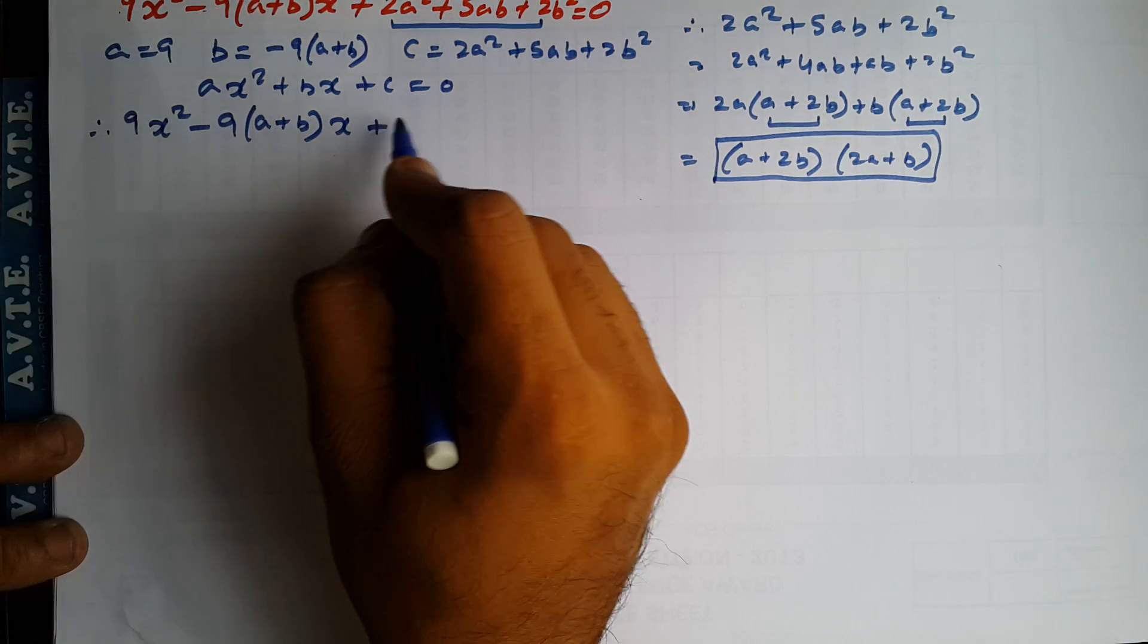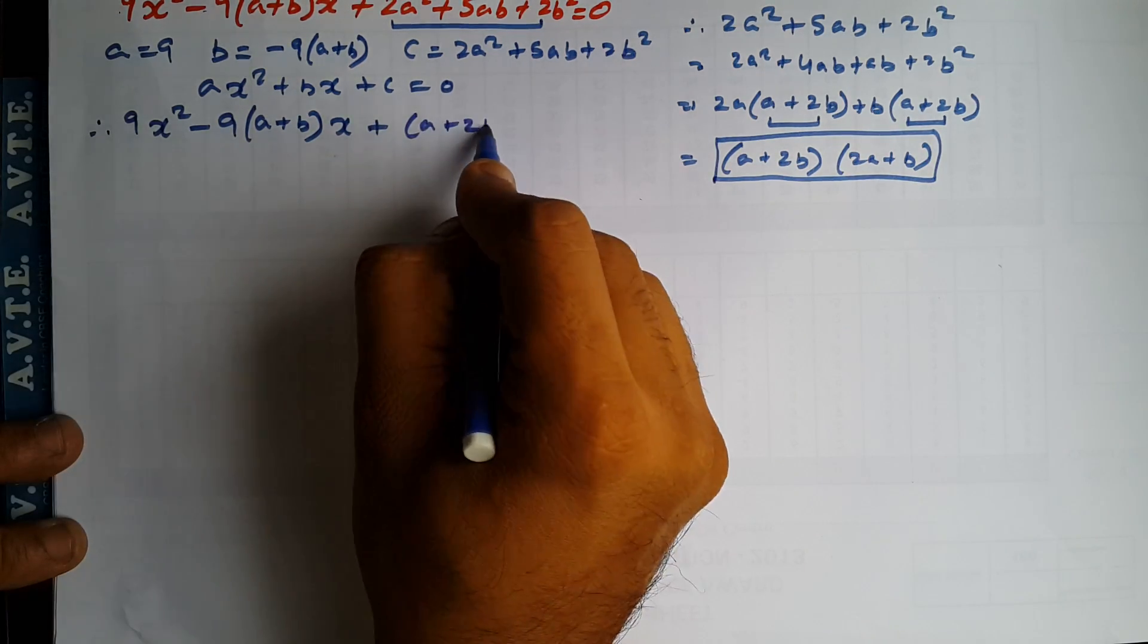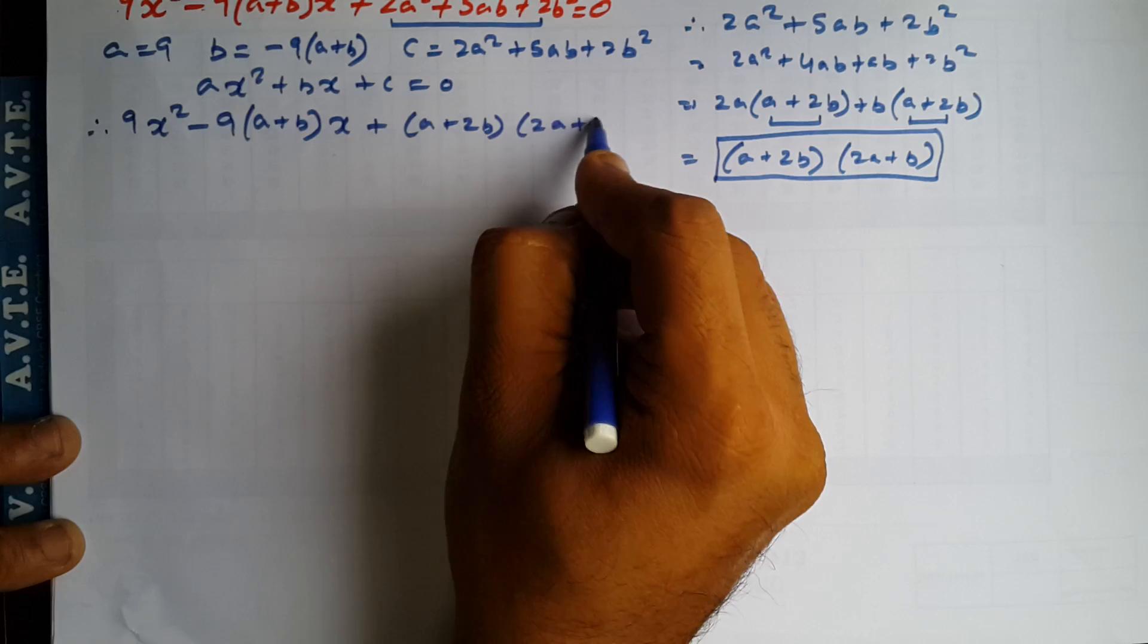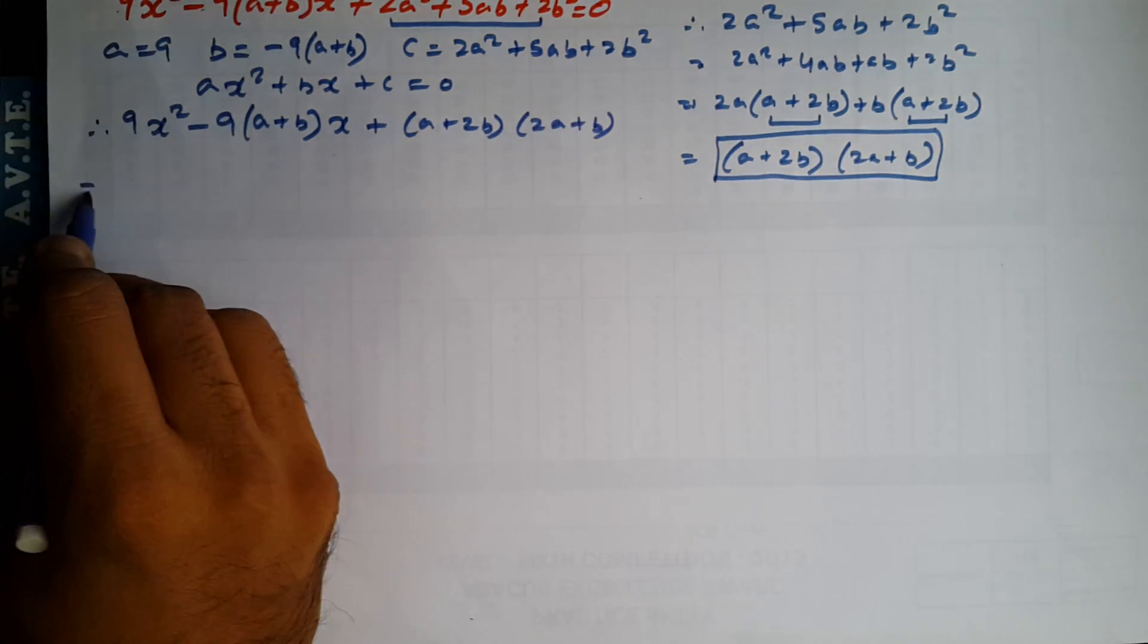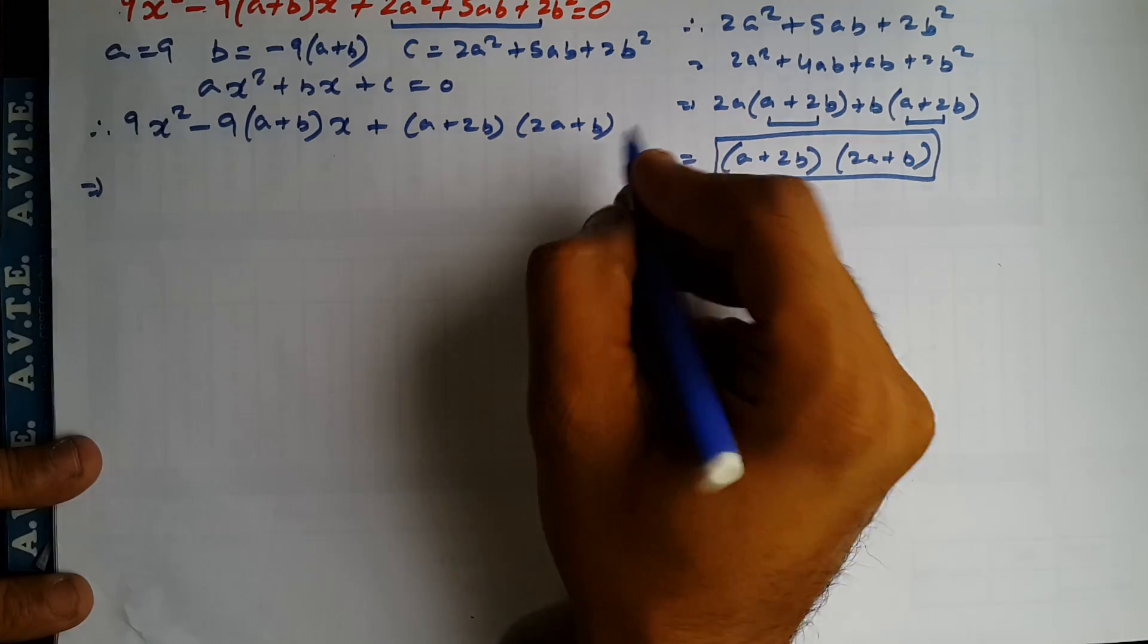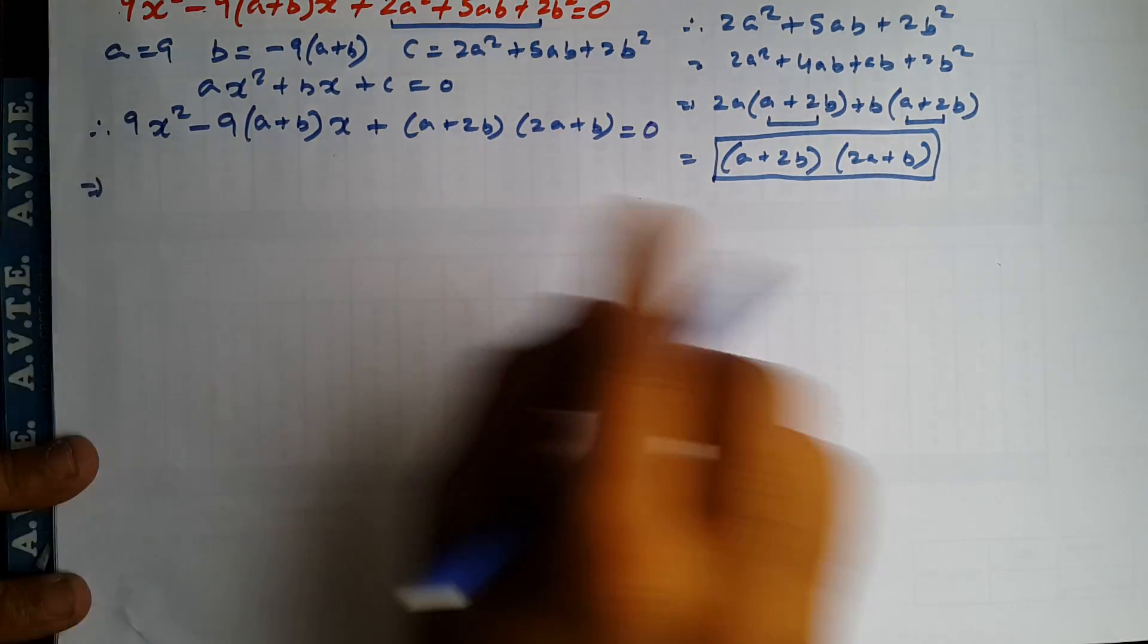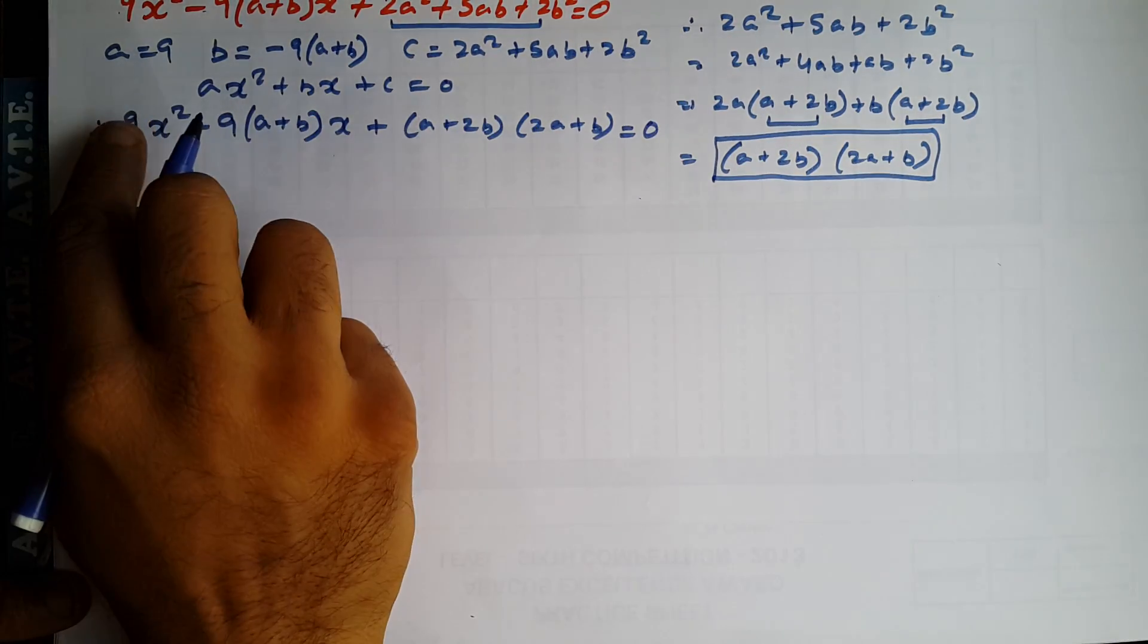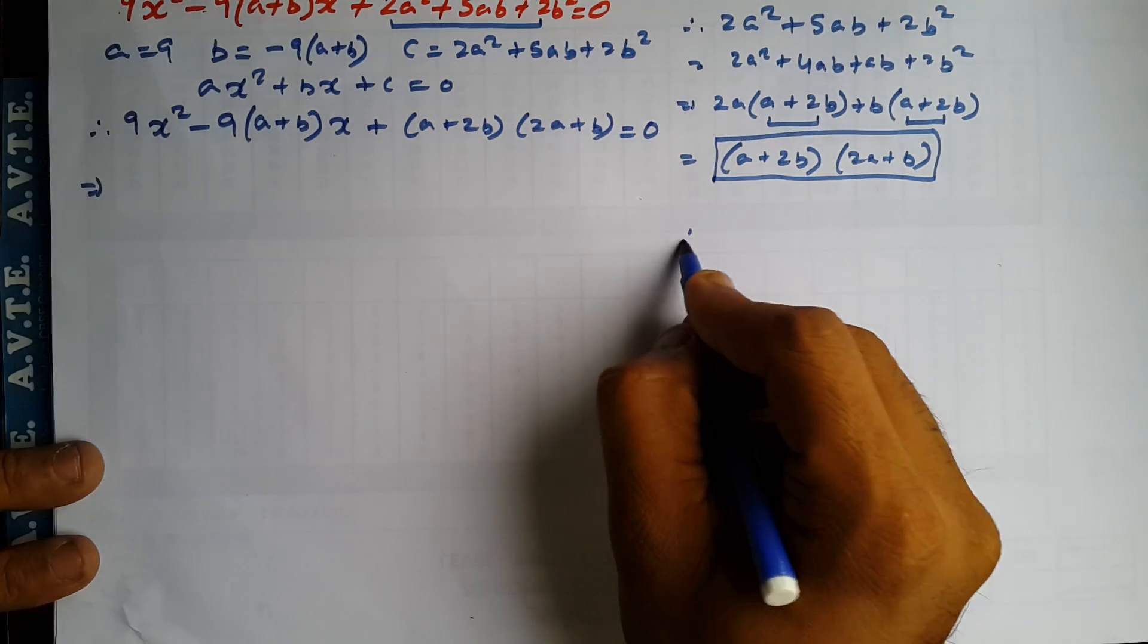Got it? So this is A plus 2B and this is 2A plus B. So now what do you do? You have to do this into this. This is a factor of a term C.